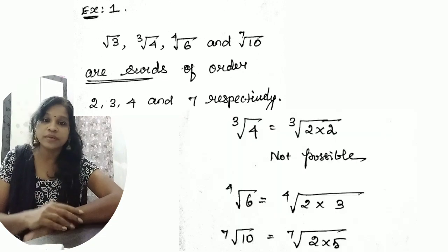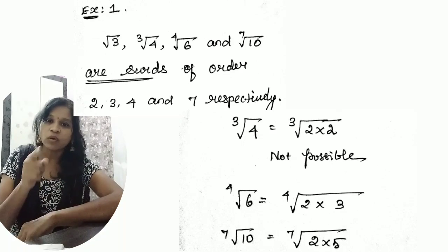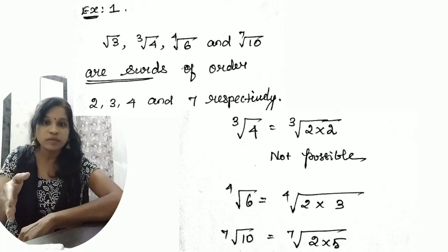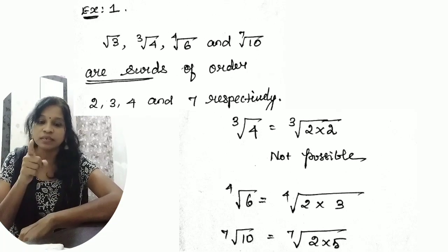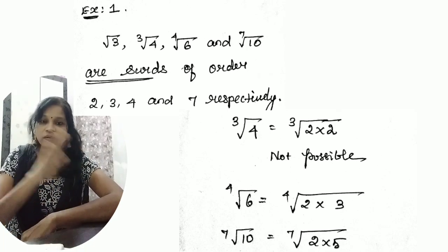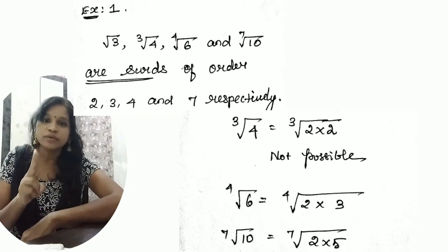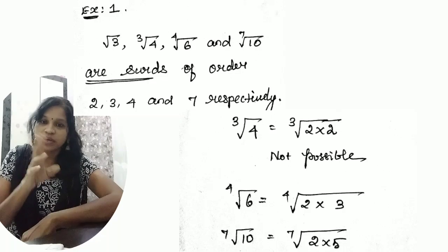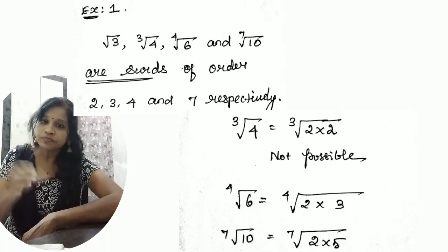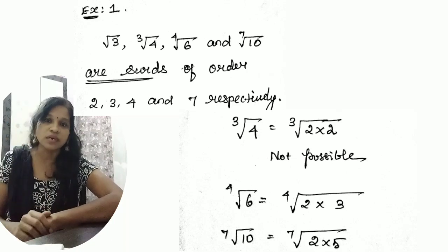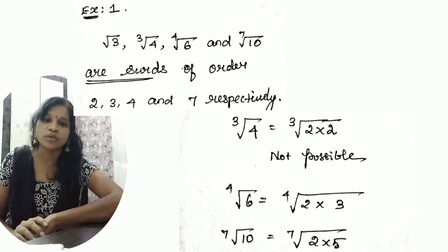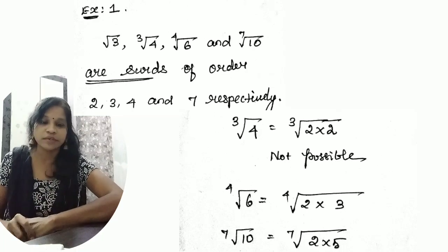Now look at the second number, ∛4. Inside 4, we write 2 × 2. That is a perfect square. If it were a square root we might say it is not a surd, but it is a cube root. For a cube root we need three factors to take one out, but here we only have two factors of 2 — we cannot take it out. So the whole number is irrational, not rational, and an irrational root means the number is a surd.